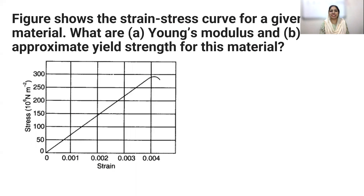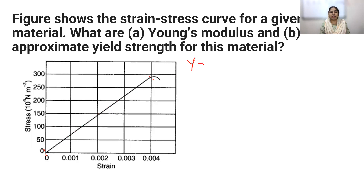Now let's look at the graph and find Young's modulus from the stress-strain curve. Within the elastic region, stress is directly proportional to strain. Young's modulus is defined as stress divided by strain. From the graph, we identify the corresponding stress and strain values.